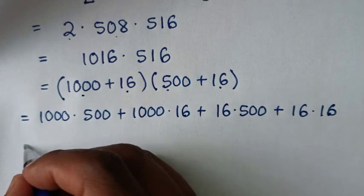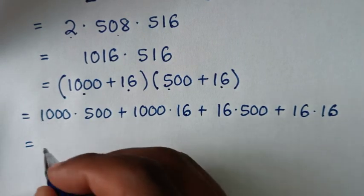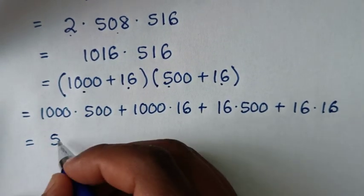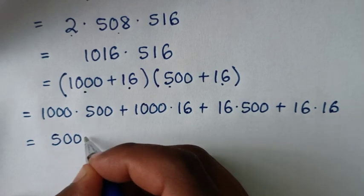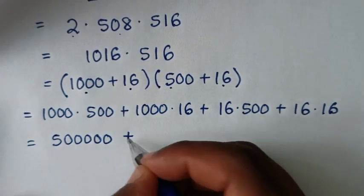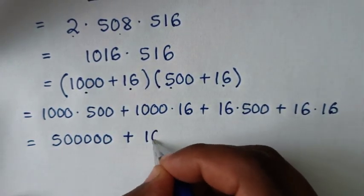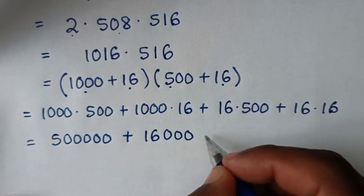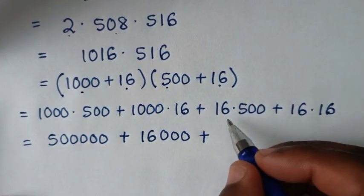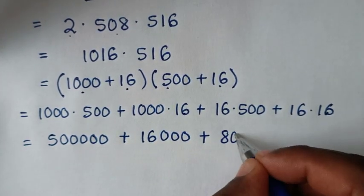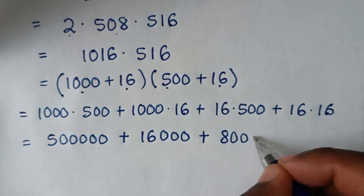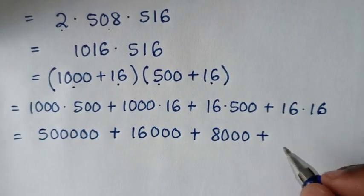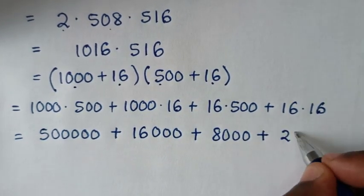Then it will be equal to: 1 times 5 is 5, with 5 zeros, giving 500,000. Plus 1 times 16 is 16, with 3 zeros, giving 16,000. Plus 16 times 5 is 80, with 2 zeros, giving 8,000. Plus 16 times 16 is 256.